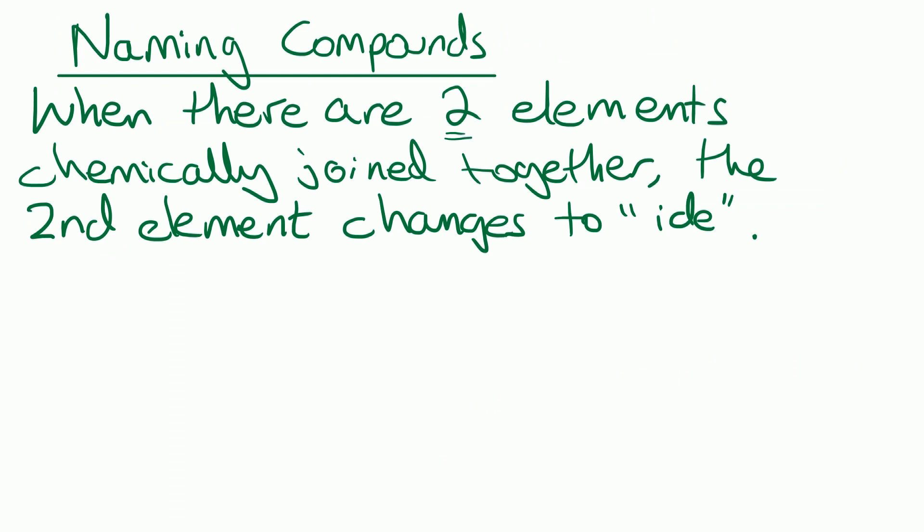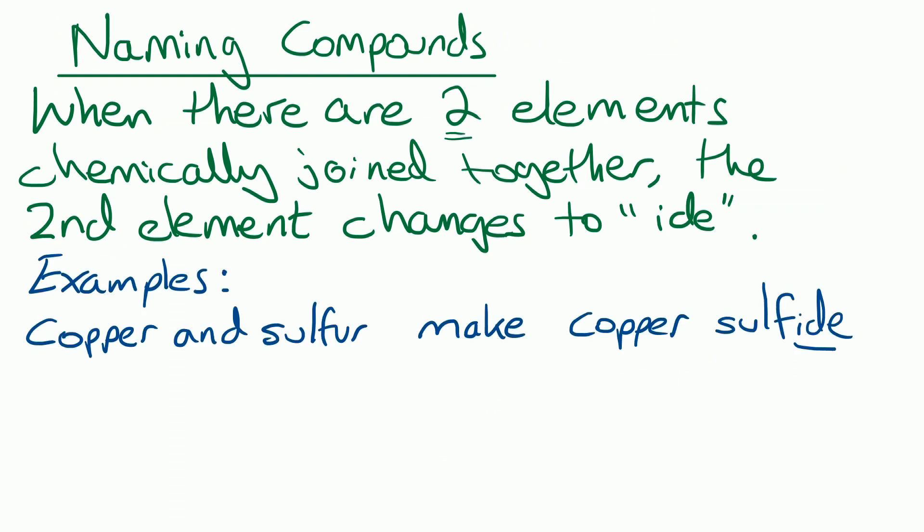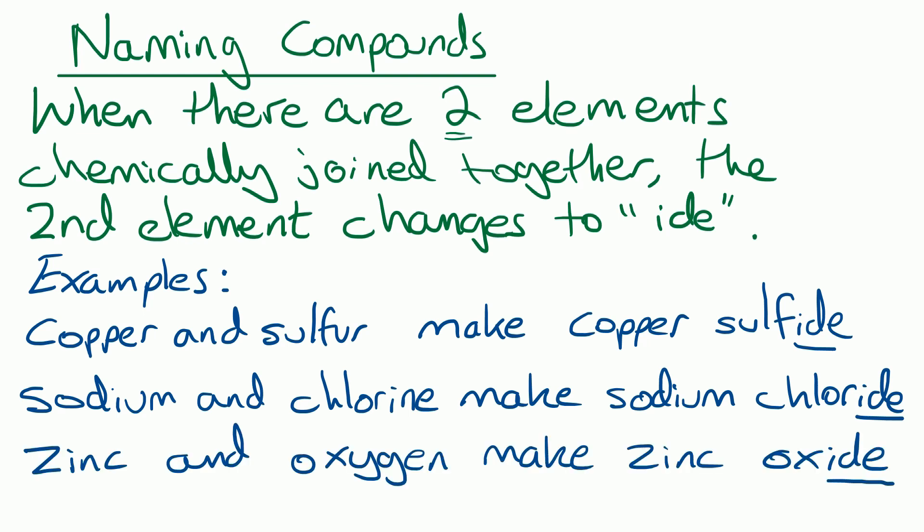When it comes to naming compounds, when there are two elements chemically joined together, the second element changes to 'ide'. For example, if we had copper and sulfur joining together, it would make the compound copper sulfide. Similarly, sodium and chlorine would make sodium chloride, and zinc and oxygen would make zinc oxide. In an exam, if you didn't change the name to 'ide' on the second element, you wouldn't get the mark. Also notice how we tend to put the metal element first, like copper, and the non-metal like sulfur second.